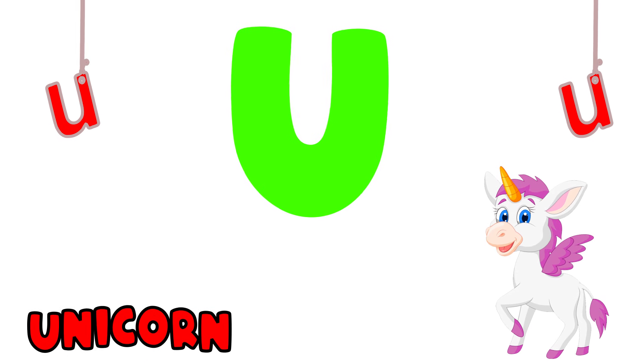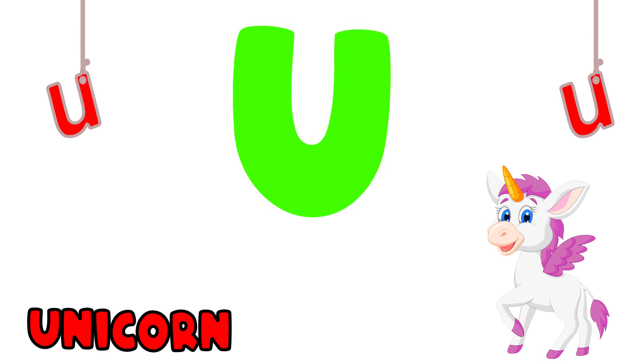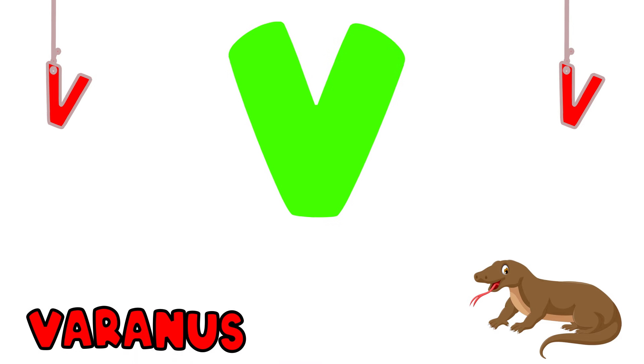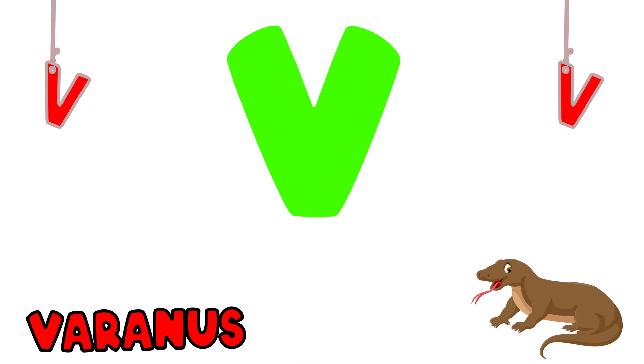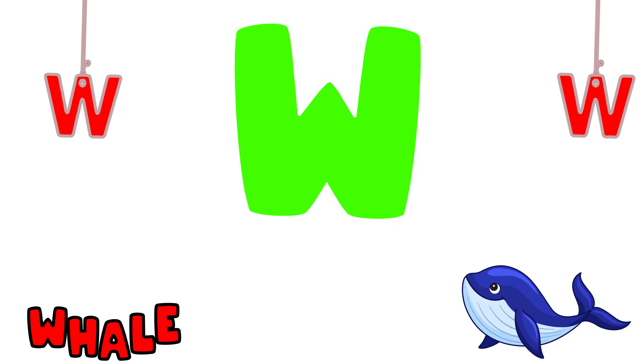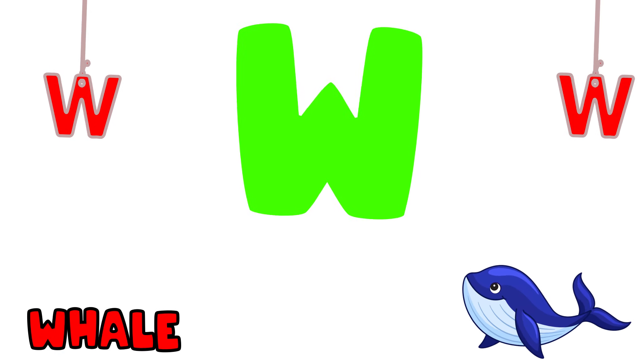U is for Unicorn. U, U, Unicorn, U, U, Unicorn, U, Unicorn. V is for Varannosaurus. V-V-Varannosaurus. W is for Whale.